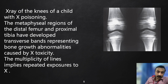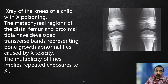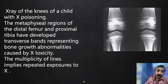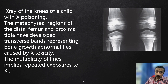Now what you see here is an X-ray of the knees of a child with X poisoning. The metaphyseal regions of the distal femur and proximal tibia have developed transverse bands representing bone growth abnormalities caused by X toxicity. The multiplicity of these lines implies repeated exposure. So what are we dealing with? You can clearly see these lines.